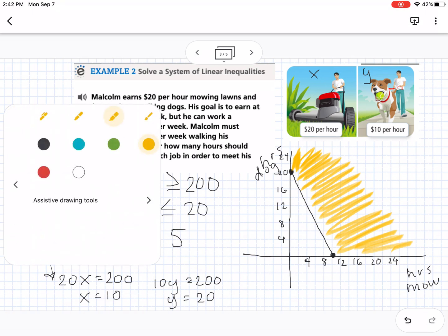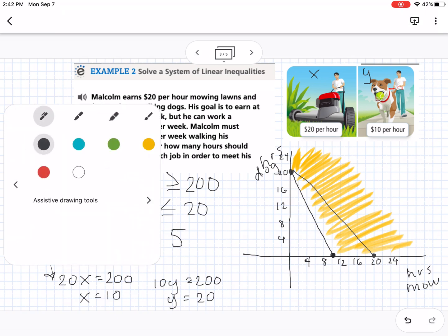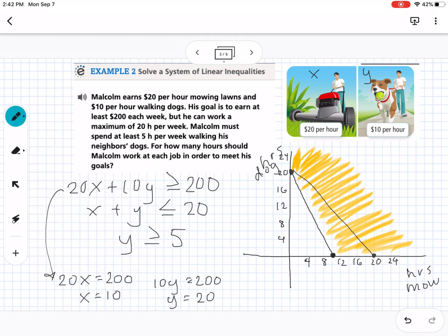Now my next one is X plus Y equals 20. So we know that the intercept for both of those would be 20 and 20. So we're going to connect those also with a solid line. But this time it has to be less than, so it's going to be everywhere that is less than that second line. You can sort of see right now that double shaded region is that middle triangle there.